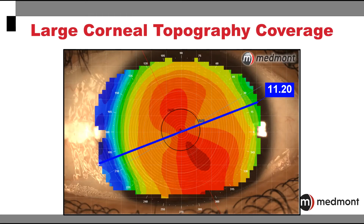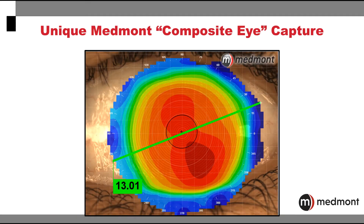One of the many strengths of the Medmont Topographer is its ability to image a large surface area of the cornea. In this case, you can see over 11 millimeters with this one single photo. However, the unique Medmont composite eye capture allows you to image 100% of the cornea, which is valuable when we're constructing large diameter specialty contact lenses.